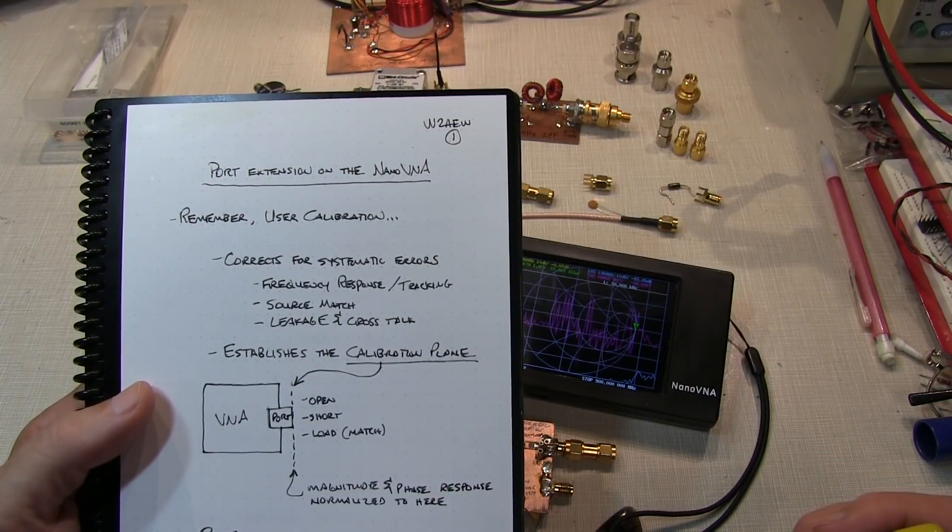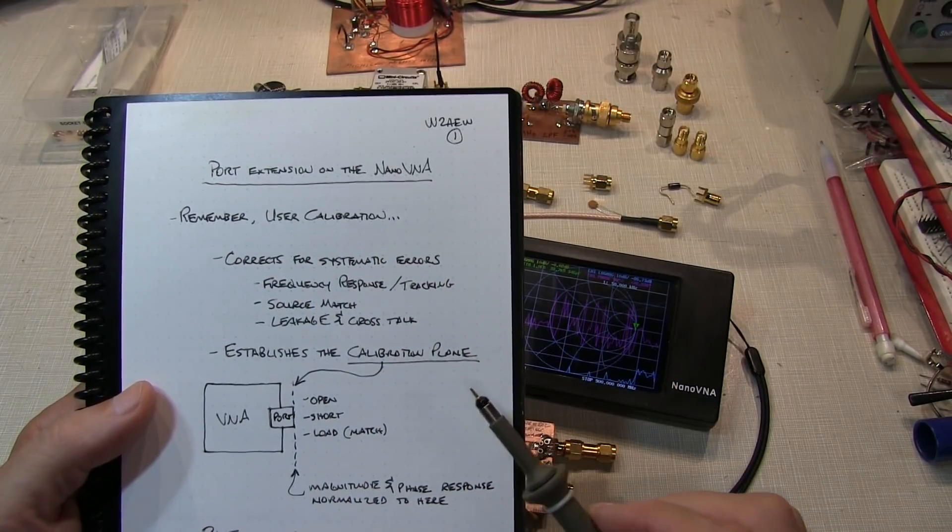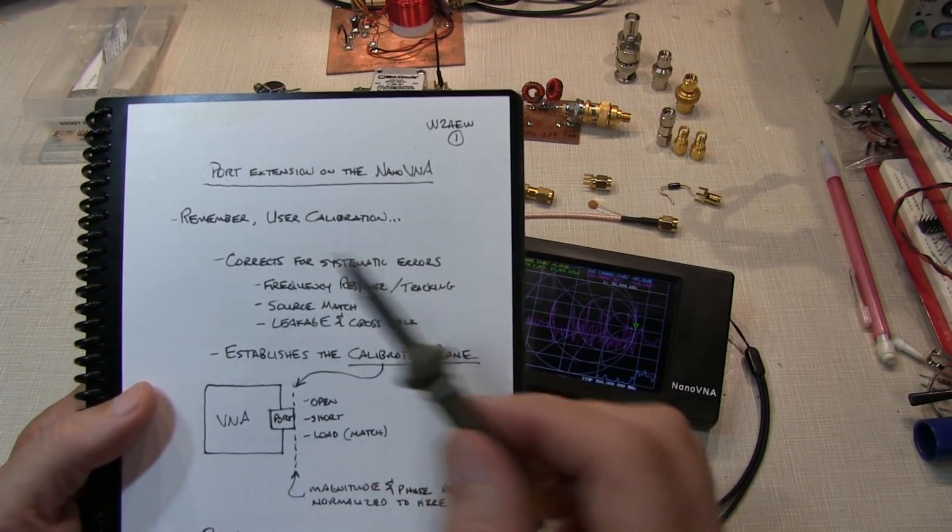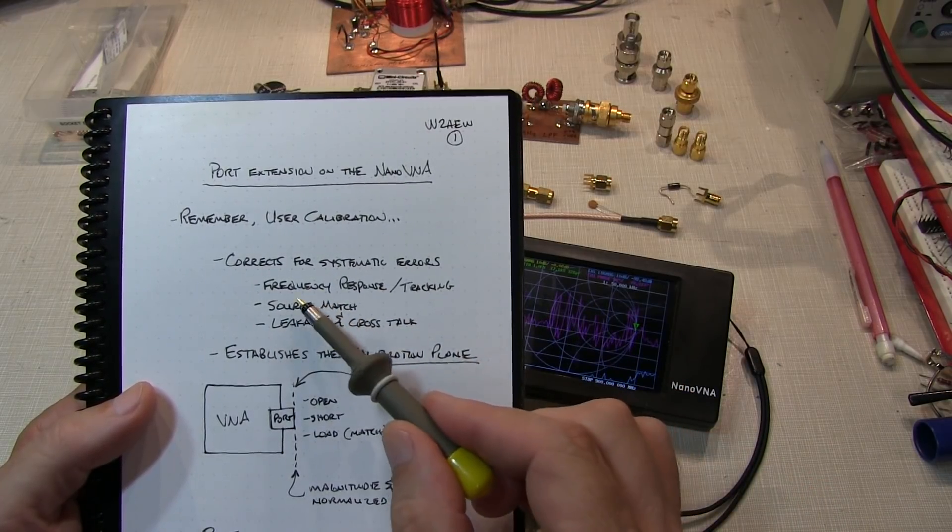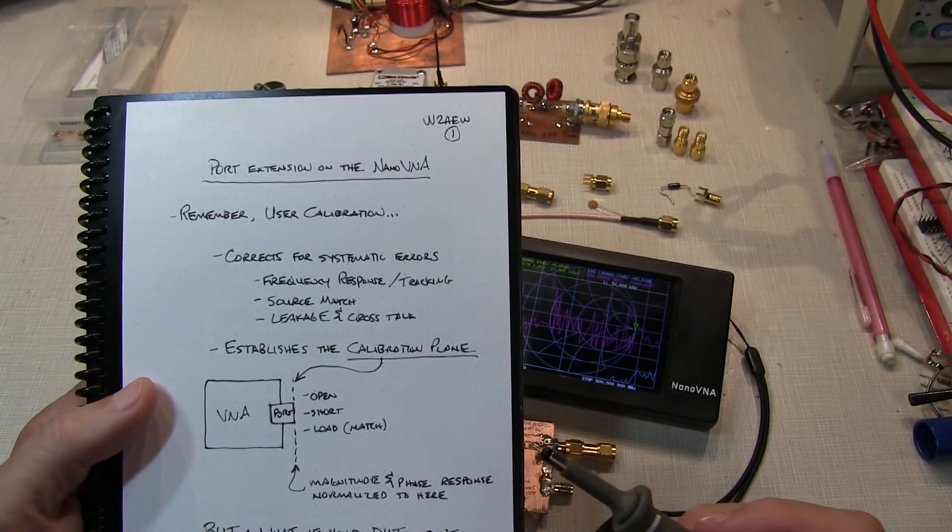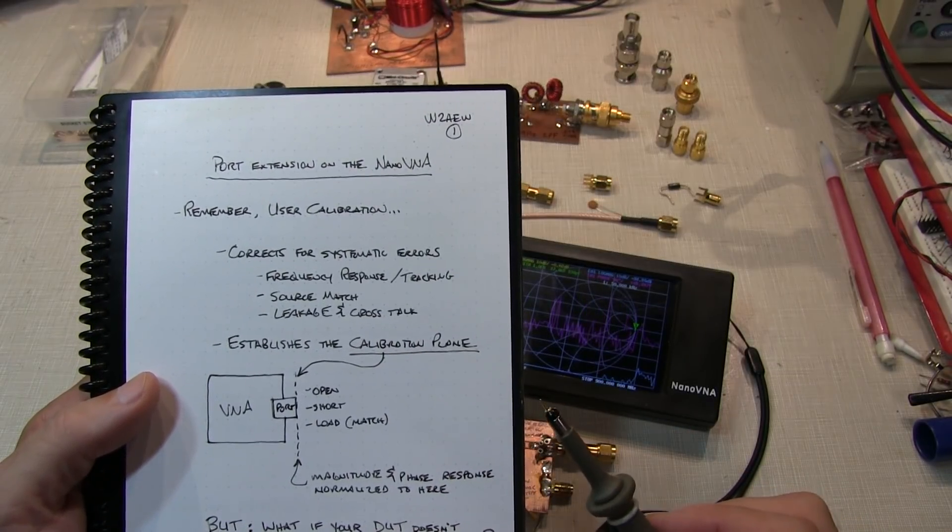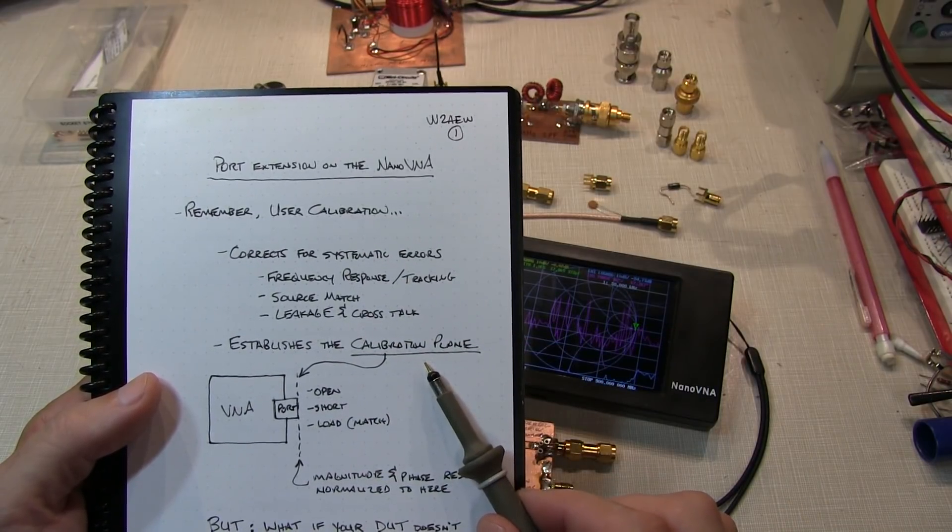This is a bit of a follow-on of video 3.13 where we talked about user calibration in a VNA. Remember that user calibration corrects for systematic errors in the instrument itself, things like frequency response and tracking, source match, and leakage and crosstalk terms. But the other important thing that the user calibration does is establishes the calibration or measurement plane.